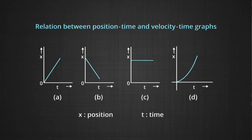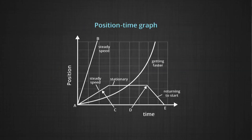Let us look at some position-time graphs. In graph (a) there is a straight line going up. In (b) there is a line going down, or with a negative slope. Graph (c) is a line parallel to the x-axis, and graph (d) shows a curve with curvature pointing upwards. Another picture shows line (a-b) as a straight line, then a curve, and yet another broken line made up of straight parts. Let us see section by section what each part tells us.